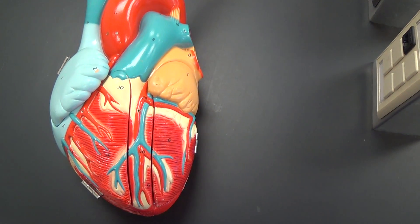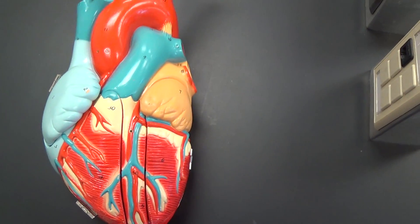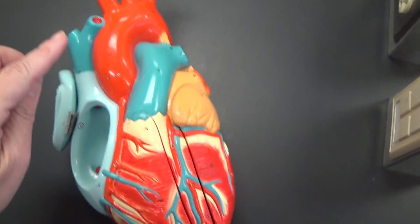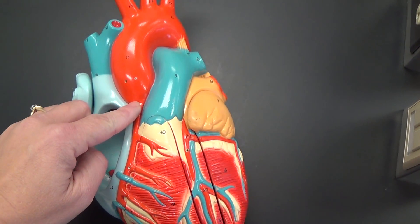This video will cover the coronary circulation and the conduction system. If we move this, what we see is the aorta. Coming off the aorta here, we have the right coronary artery.